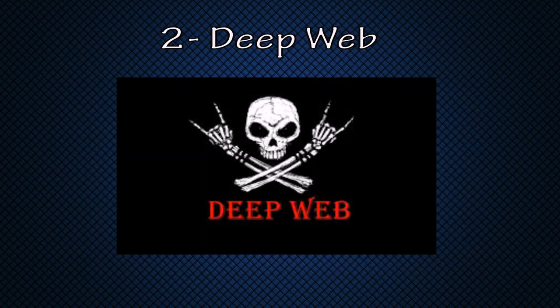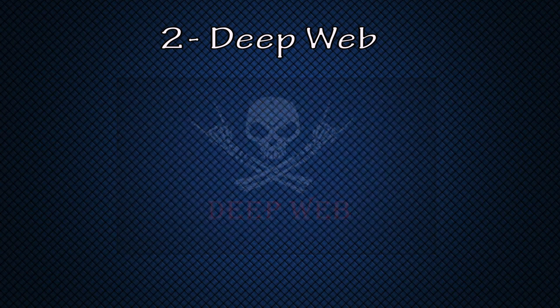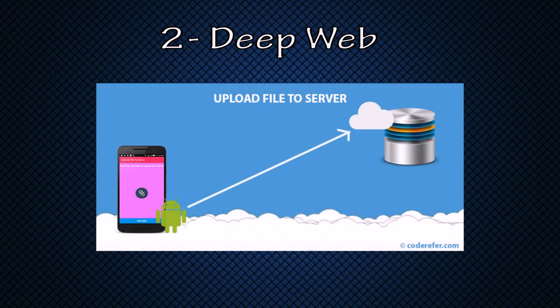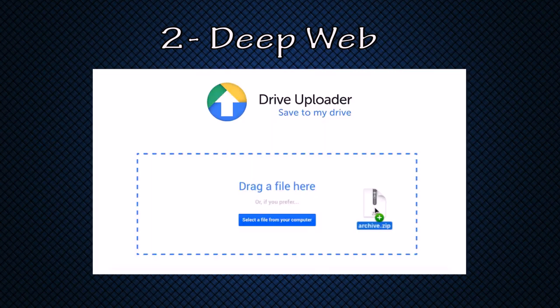Now comes the deep web. Deep web is simply the internet that cannot be searched on Google — the data is not indexed on Google. Deep web contains data that is uploaded to servers and is available only to authenticated users. For example, data you upload on your Google Drive but is only visible to a friend or colleague. This type of data uploaded to cloud storage or any online storage comes under deep web.